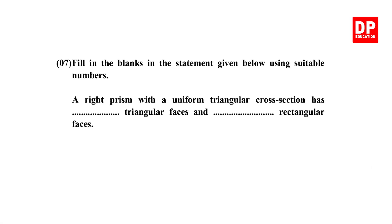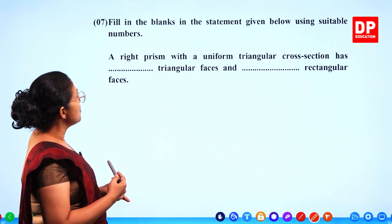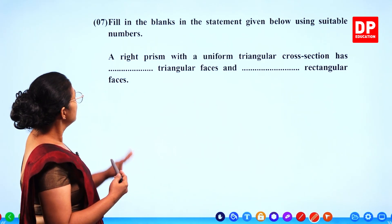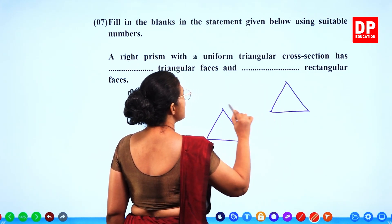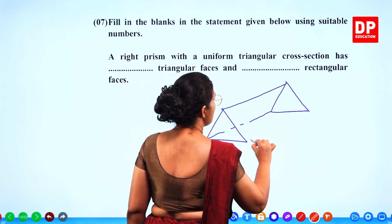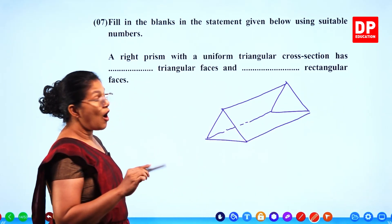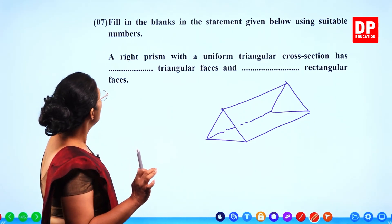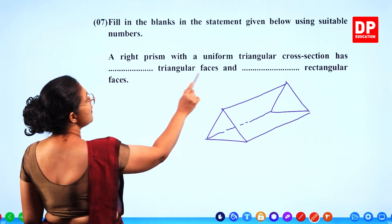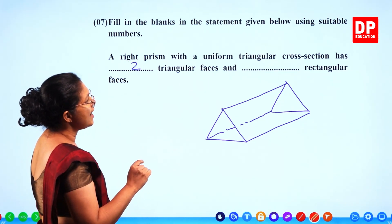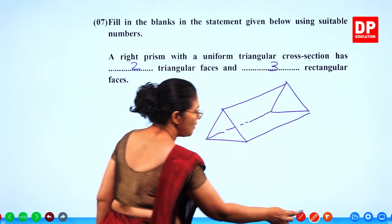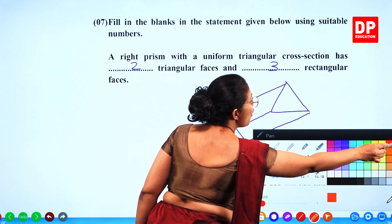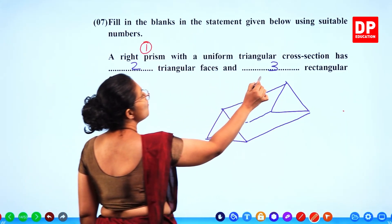Question number 7: fill in the blanks. A right prism with a uniform triangular cross section has how many triangular faces? A triangular prism has 2 triangles and 3 rectangles. So you fill in 2 triangular faces and 3 rectangular faces. You get one mark for each blank.